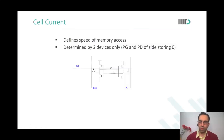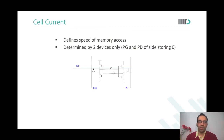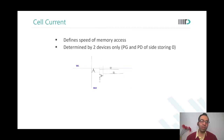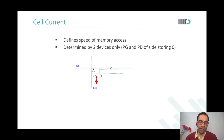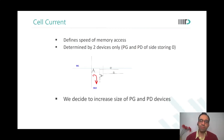The most important figure of merit for a memory cell is area. After area, the next figure of merit is cell current or read current, which defines the speed of memory access. During a read, only the side storing zero discharges its bit line; the other bit line stays at the pre-charged voltage. The read current depends on the pass gate and pull-down stack. To get more read current, we would size the pass gate and pull-down larger, reducing their resistance.